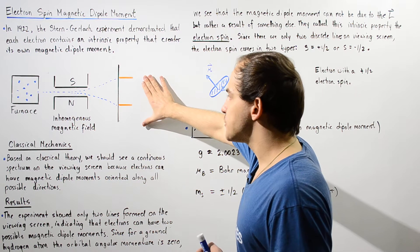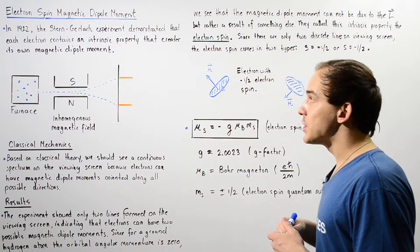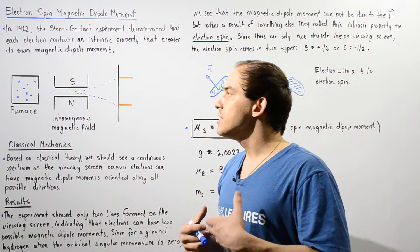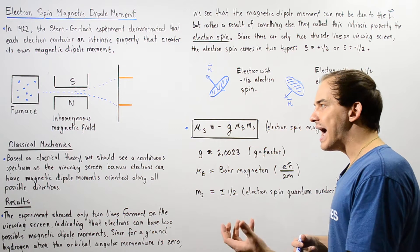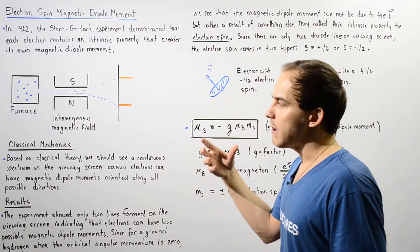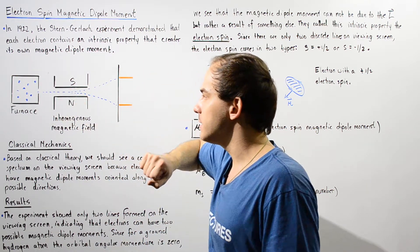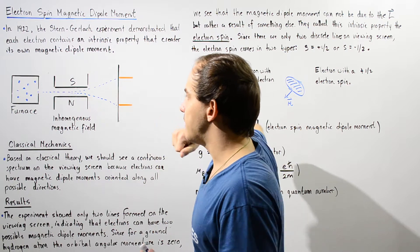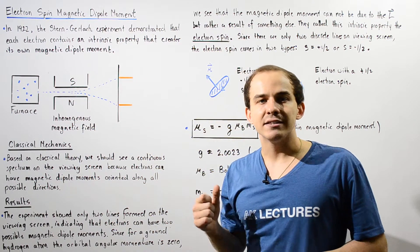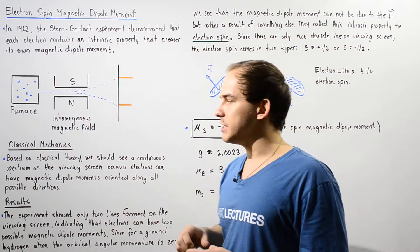The experiment looks something like this. We have a furnace or oven that contains our atoms. In the Stern-Gerlach experiment they used silver atoms, but we're going to use the simplest type of atom — the hydrogen atom in its neutral state. We have a single electron within the 1s orbit. The hydrogen atoms inside the oven are heated and escape, traveling through a region with a south and north pole of a magnet that creates a non-uniform, or inhomogeneous, magnetic field.